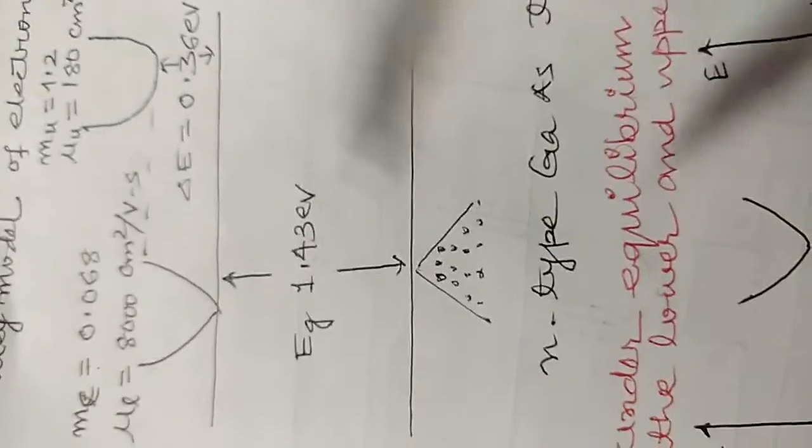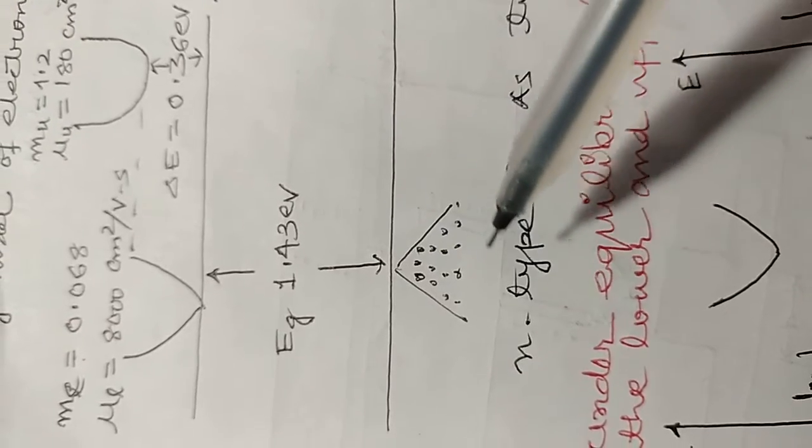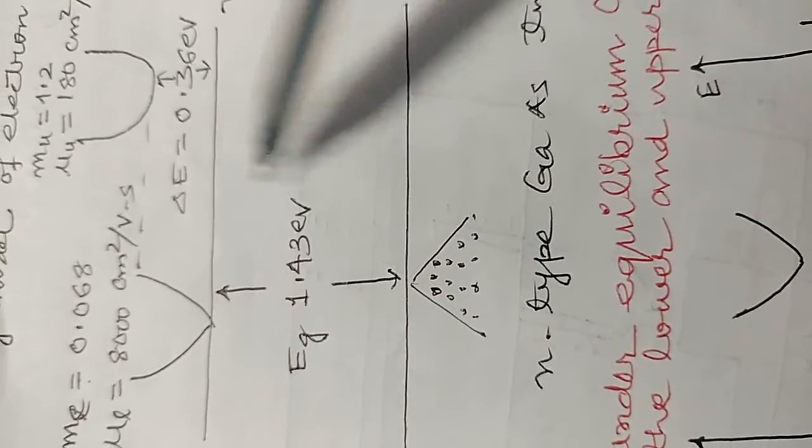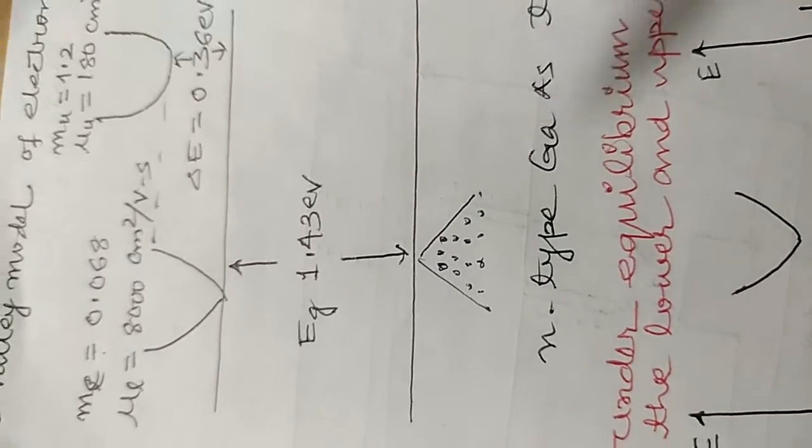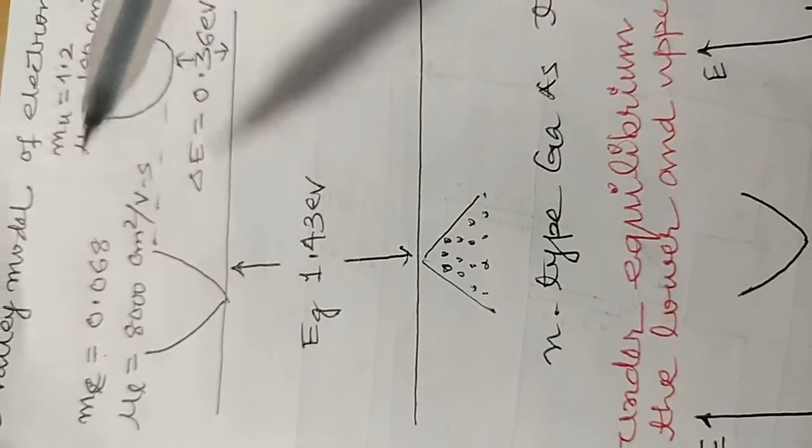Here the semiconductor's energy diagram is shown in balance when the electrons are there. There is an energy gap, forbidden gap, that is 1.43 electron volts. There are two valleys, these are the energy levels.